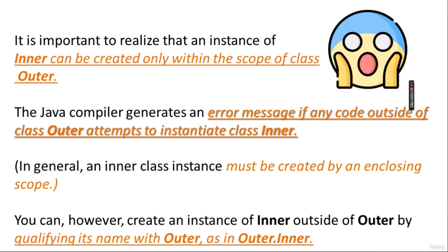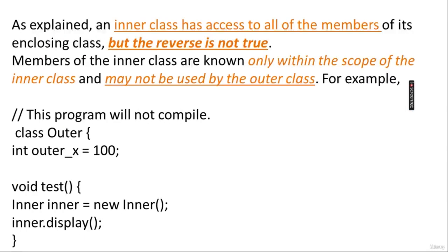You can, however, create an instance of class Inner outside of Outer by qualifying its name with Outer, as in 'Outer.Inner'. Without Outer, you cannot use the Inner class. Inner class methods can access members of the outer class including private members, but the reverse is not true — outer class cannot directly access inner class members. Members of the inner class are known only within the scope of the inner class and may not be used by the outer class.